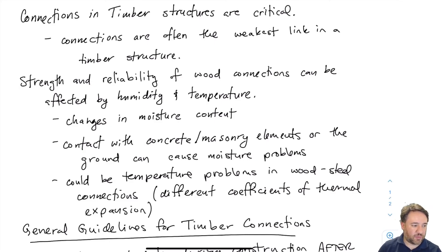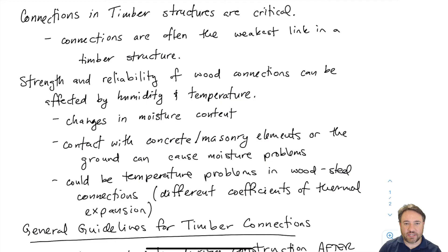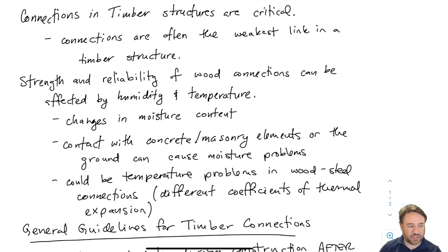One thing we didn't discuss before is temperature problems in wood-steel connections. If I have really wide temperature swings with steel connected to timber, there is a possibility that the steel and timber have different coefficients of thermal expansion, so one could tug or pull on the other in unexpected ways. We would expect those kind of issues for much larger connection types.